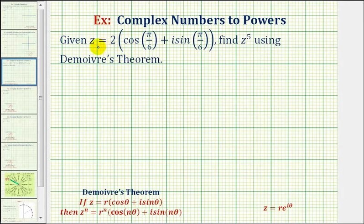Given the complex number in polar form, z equals two times the quantity cosine pi over six plus i sine pi over six, we want to find z to the fifth power using de Moivre's theorem.